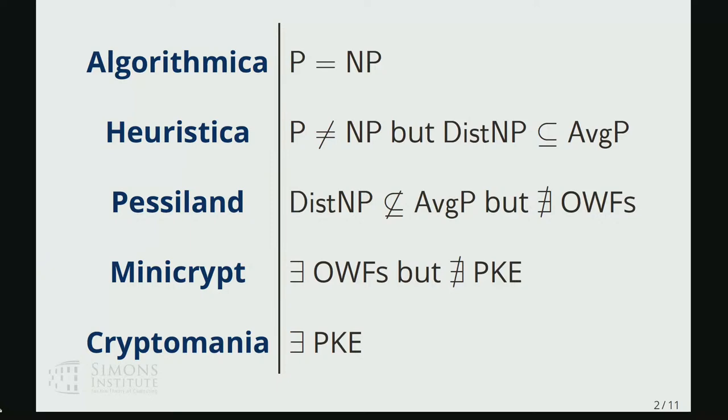These are basically five possible resolutions to the P versus NP problem that were introduced in this influential survey about average case complexity in the 1990s by Russell Impagliazzo. And these five worlds range all the way from Algorithmica, where P is just equal to NP, and so a wide range of problems can be solved efficiently in polynomial time,